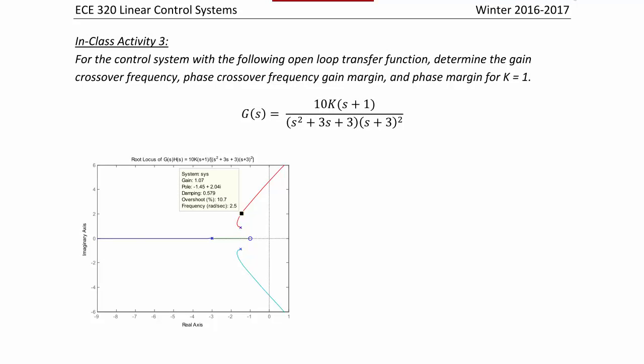Let's try one final example, Class Activity 3. For the control system with the open-loop transfer function G(s)H(s) = 10k(s+1) / [(s²+3s+3)(s+3)²], determine the gain crossover frequency, phase crossover frequency, gain margin, and phase margin for k equals 1. Unlike the last example, the root locus does cross the j-omega axis for a given gain, so we will be able to find a gain margin. Let's look at the Bode diagram to determine these values.